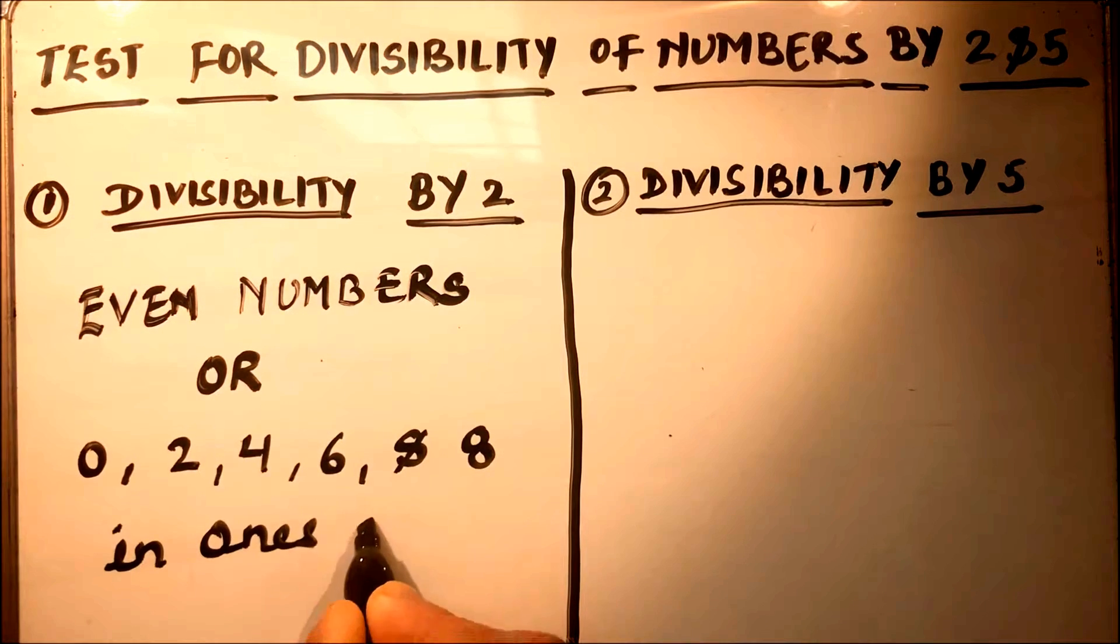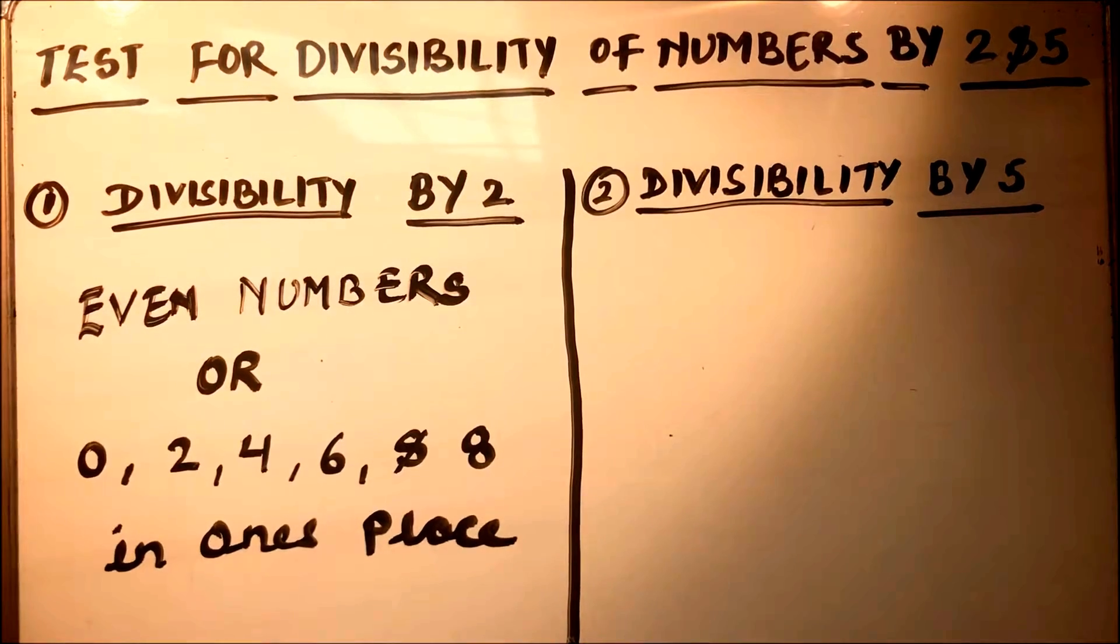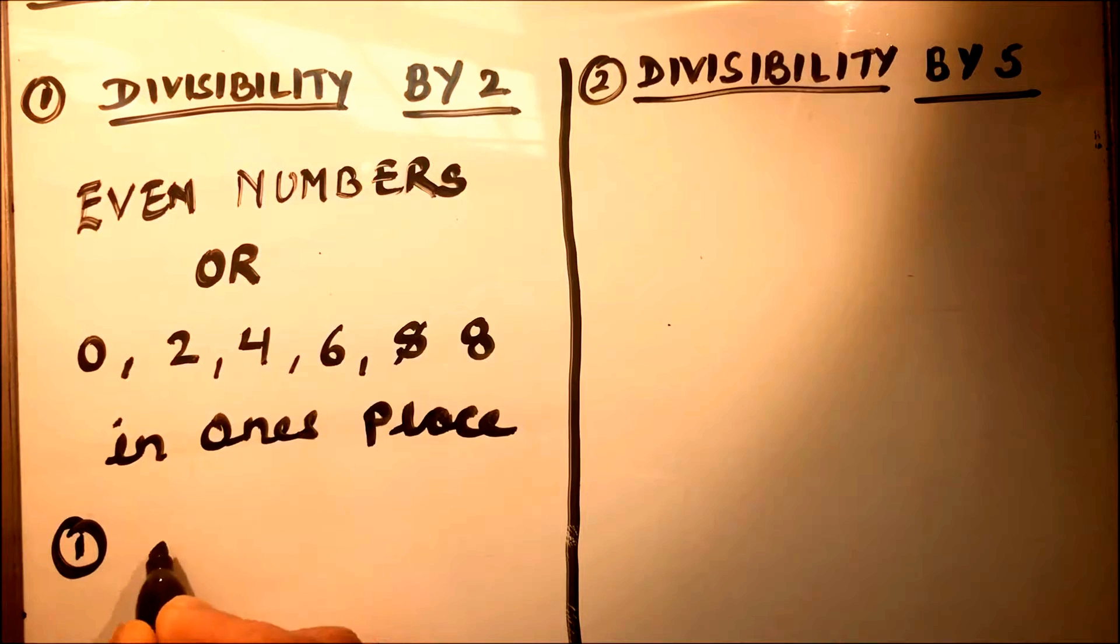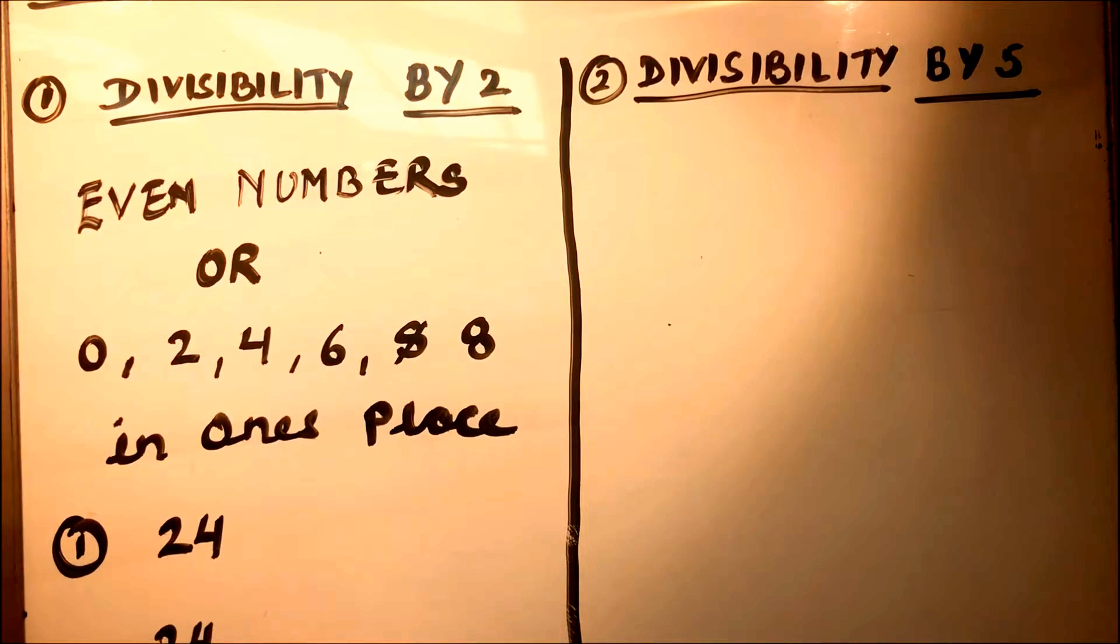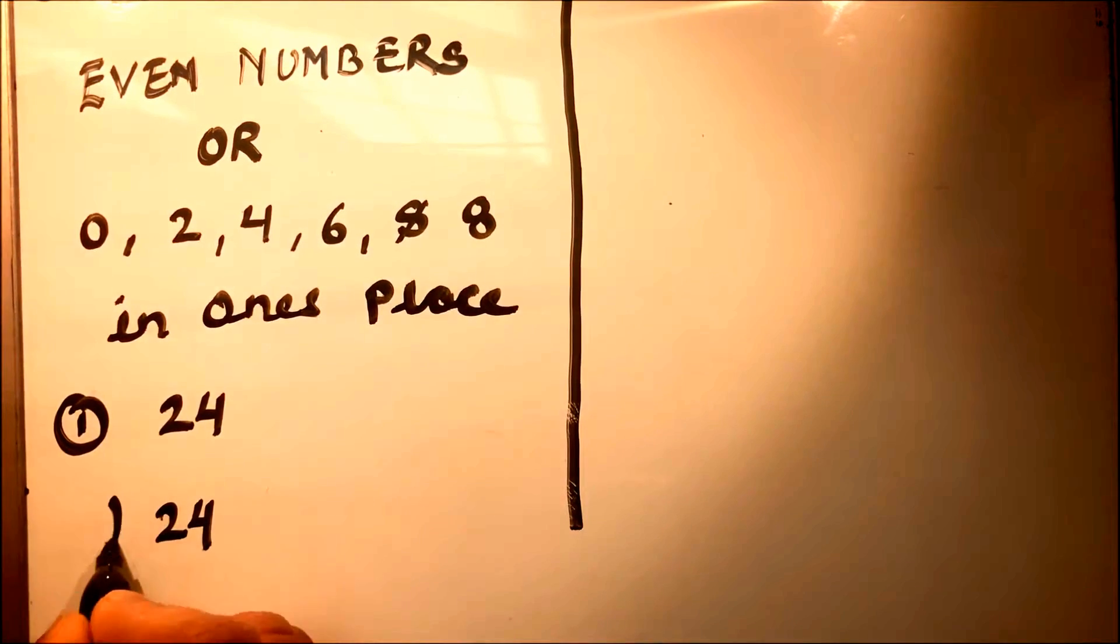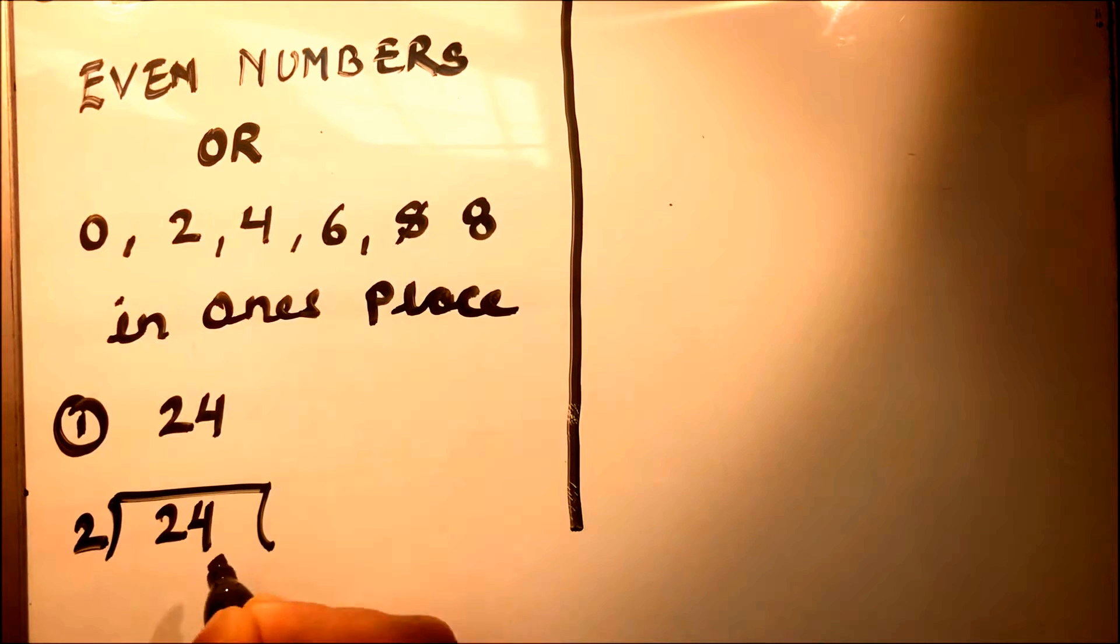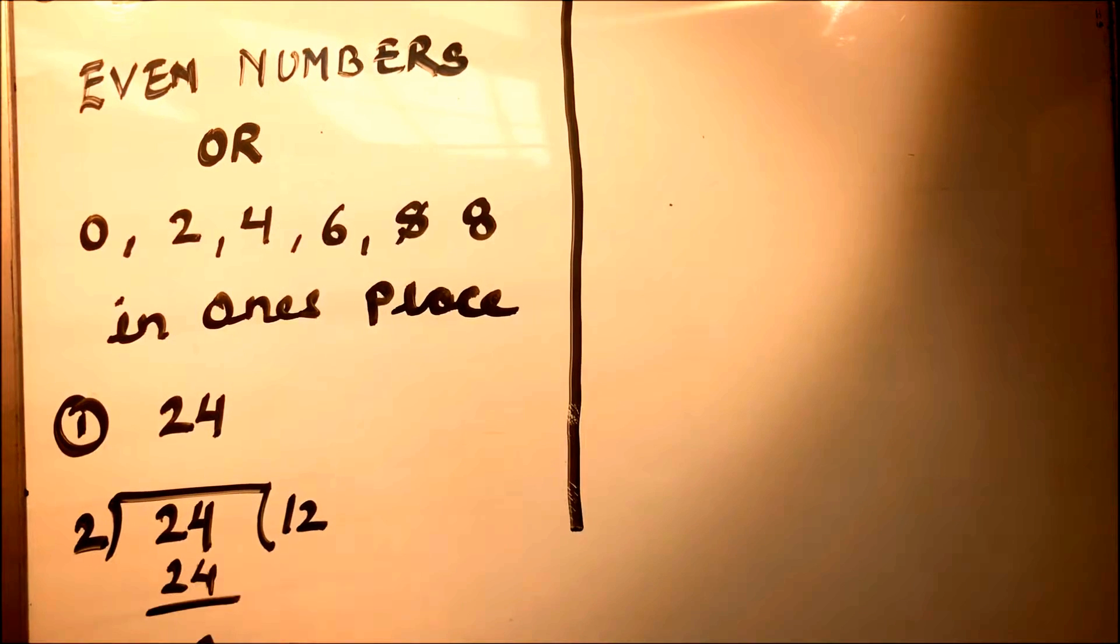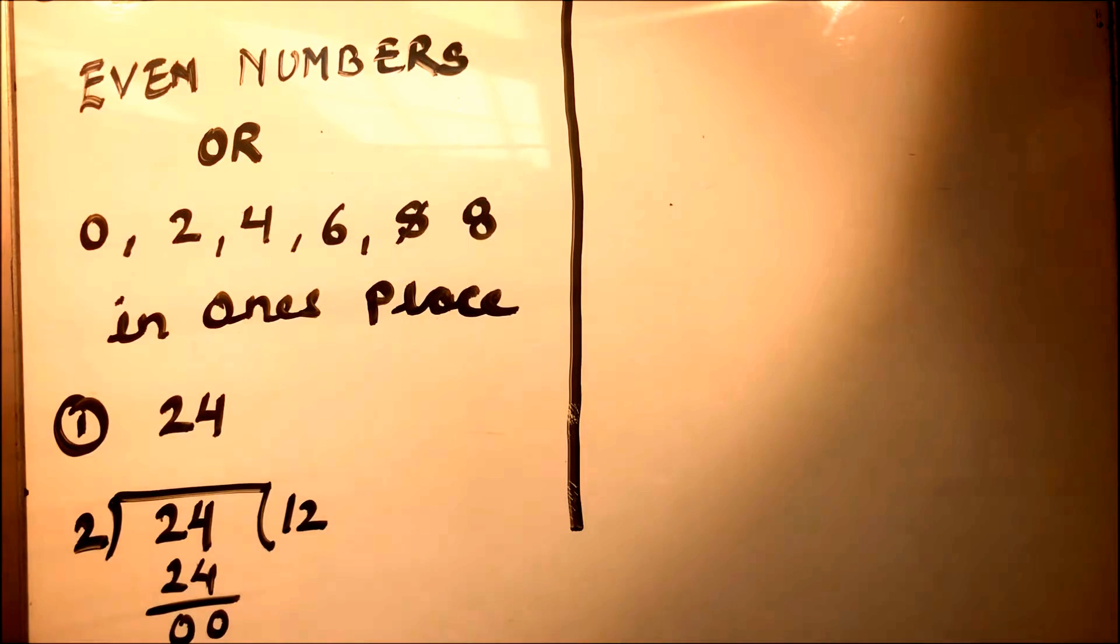Let's see with examples. Number one, if we take number 24, then we'll try to divide it by 2. We will see that 12 times 2 is 24 without any remainder, so this is divisible by 2.